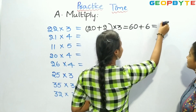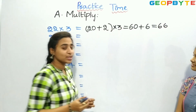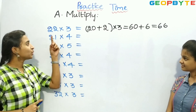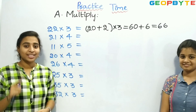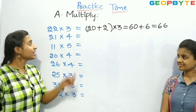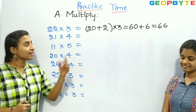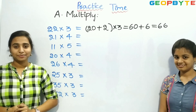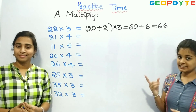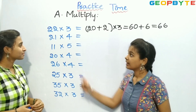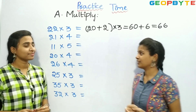Let us write 66. So children, 22 into 3 is equal to 66. That is, we have split 22 like this and found the answer. Now let us see the second one: 21 into 4.